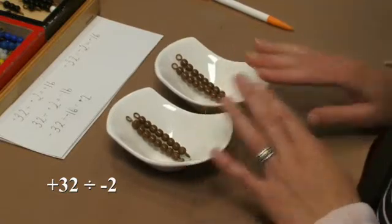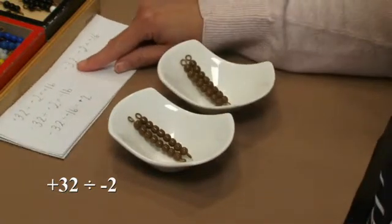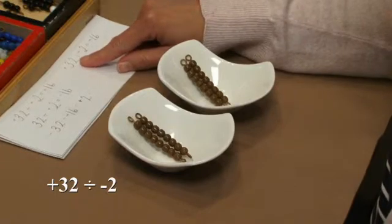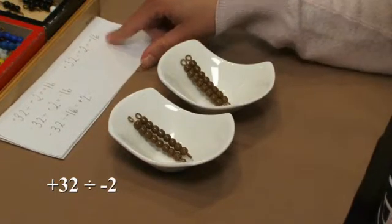So it would be a negative to me to lose that money to each of the bill collectors. So our final equation would be positive 32 divided by negative 2, and that would equal negative 16.